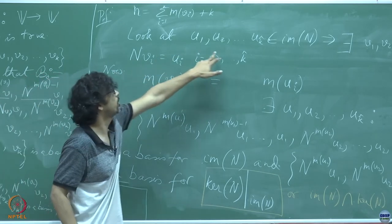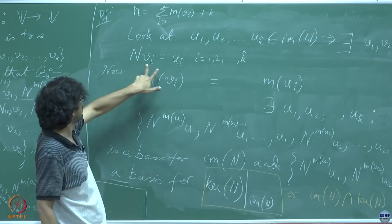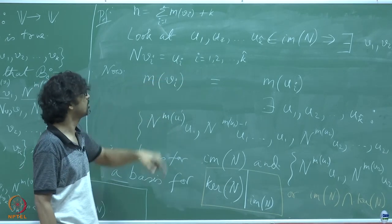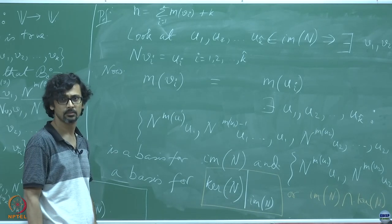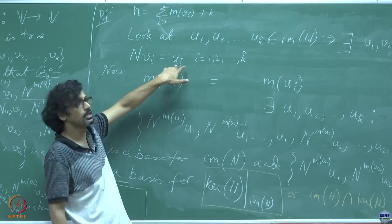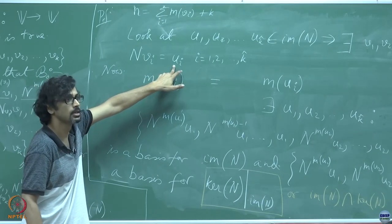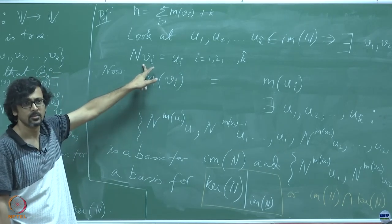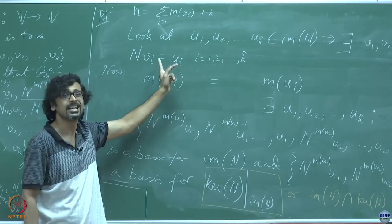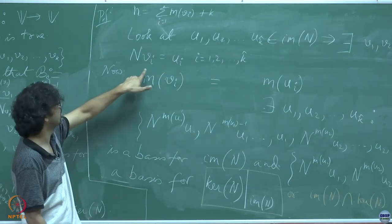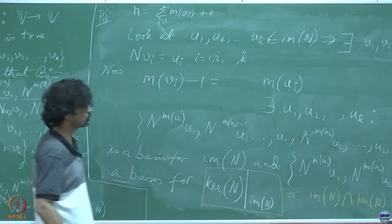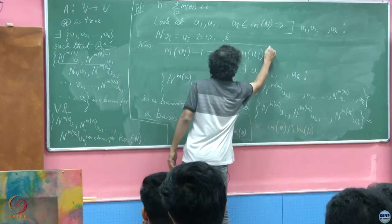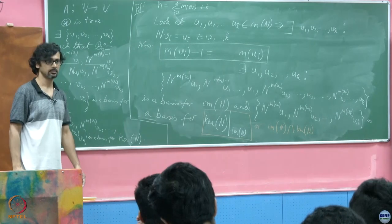What is the relation between m(v_i) and m(u_i)? If you hit v_i a certain number of times with N, it will definitely pulverize it because N is nilpotent. So m(u_i) equals m(v_i) minus 1. Does everybody agree? Because if you hit v_i m(v_i) times then you need to hit u_i m(v_i) minus 1 times. The number of times you need to hit u_i is one less than the number of times you need to hit v_i, because u_i is obtained by hitting v_i already once with N.